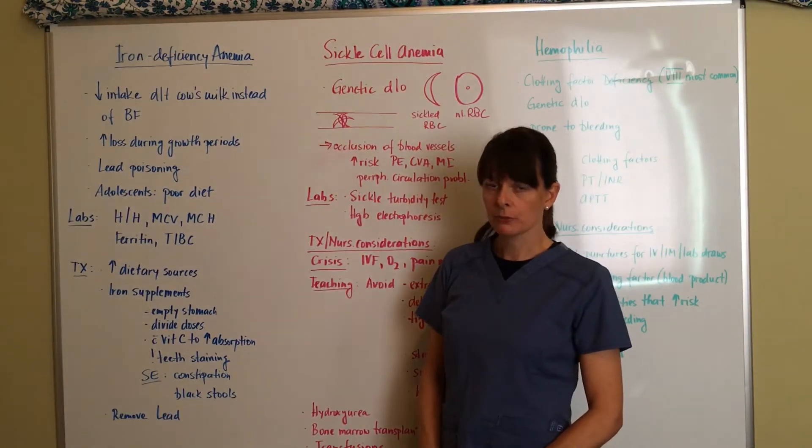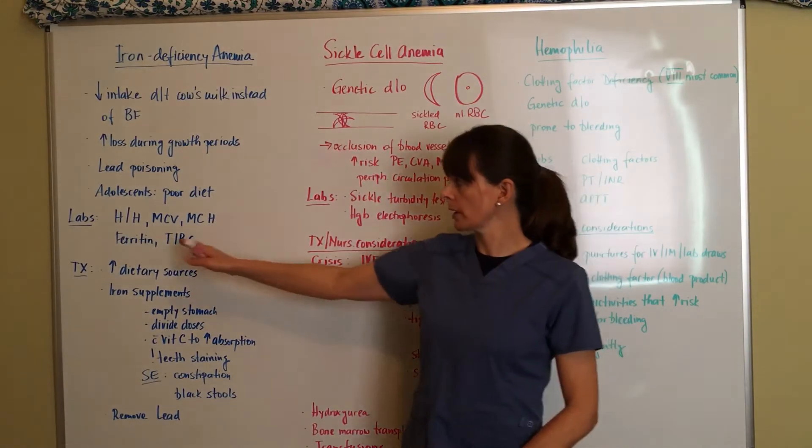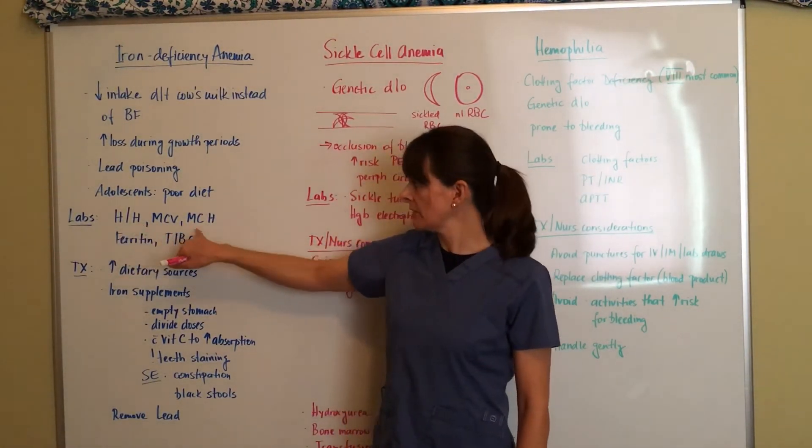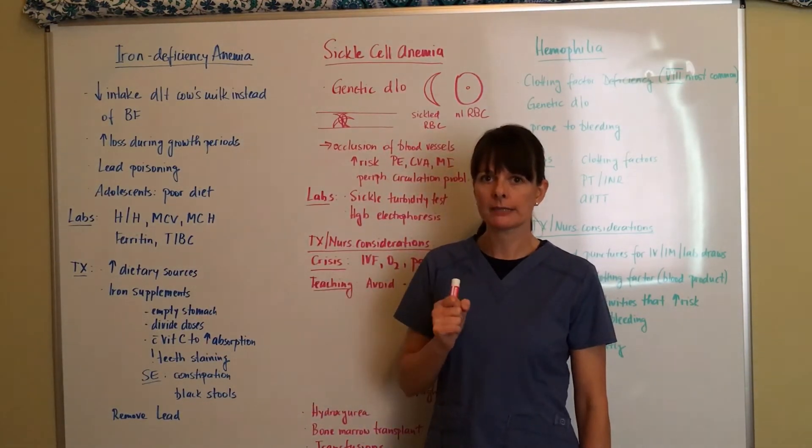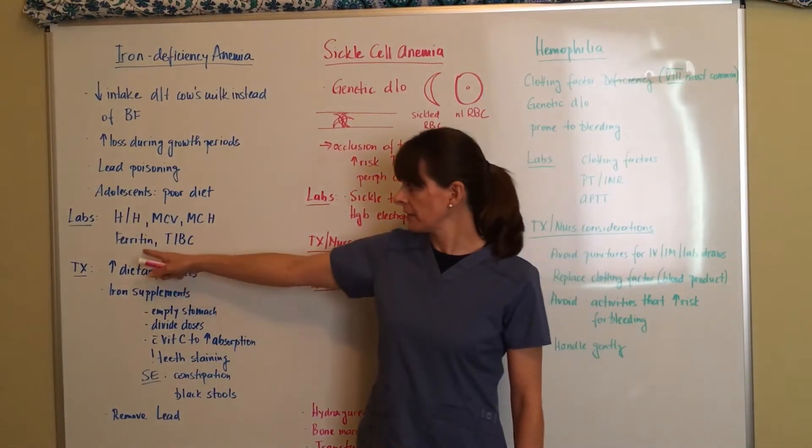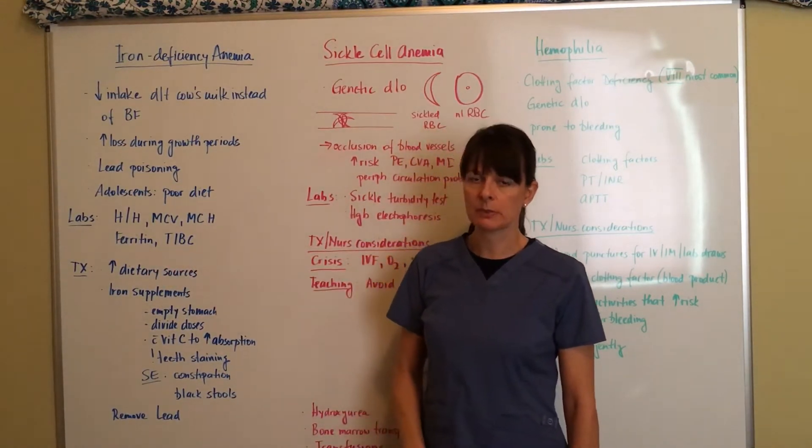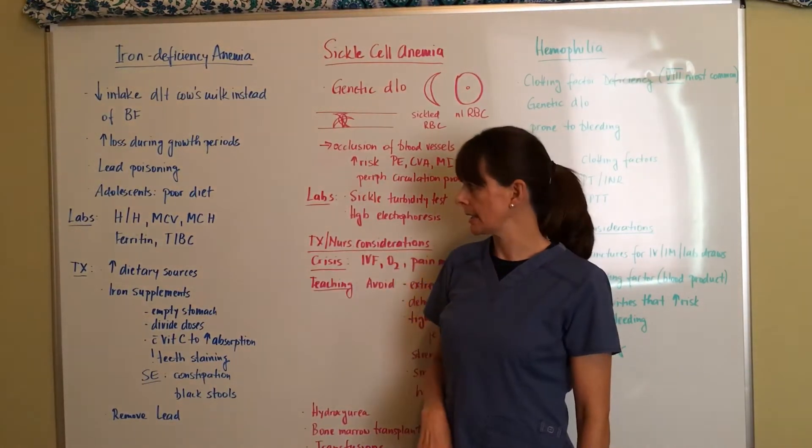In terms of labs, if we suspect iron deficiency anemia, we'll want to monitor the hemoglobin and hematocrit, MCV and MCH to see how big those blood cells are, and then ferritin and total iron binding capacity. Those are very specialized tests to assess specifically for iron deficiency anemia.